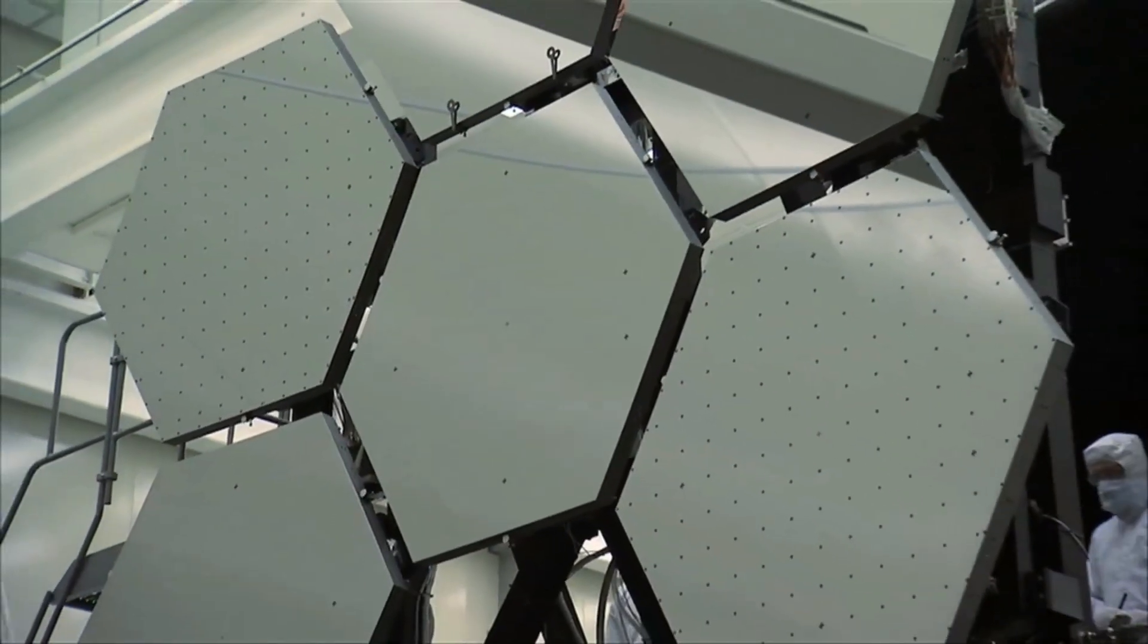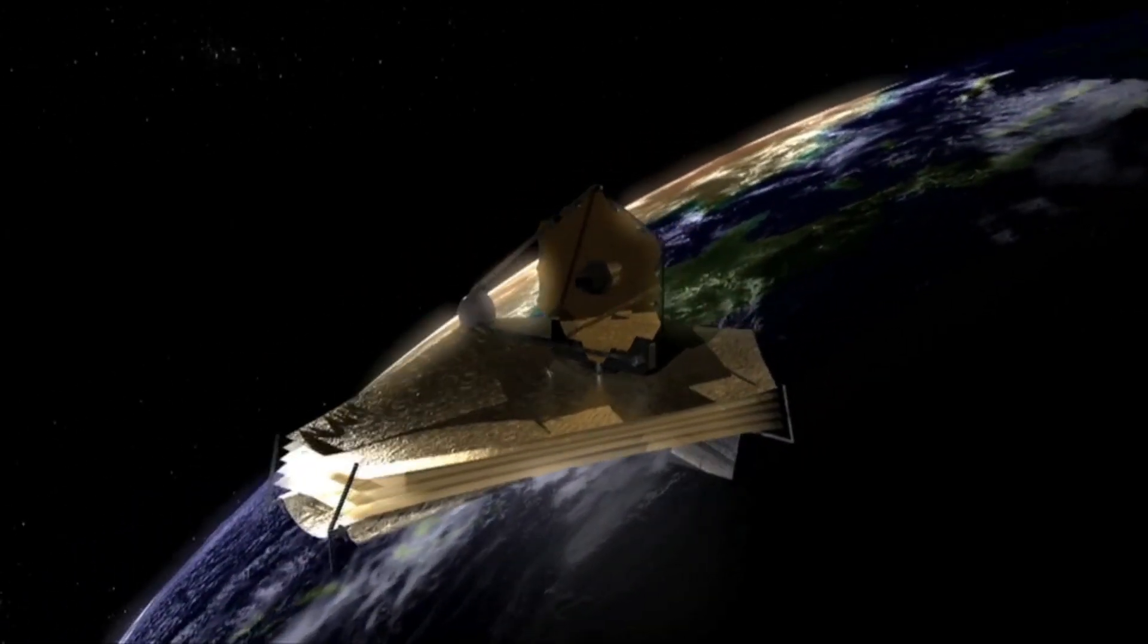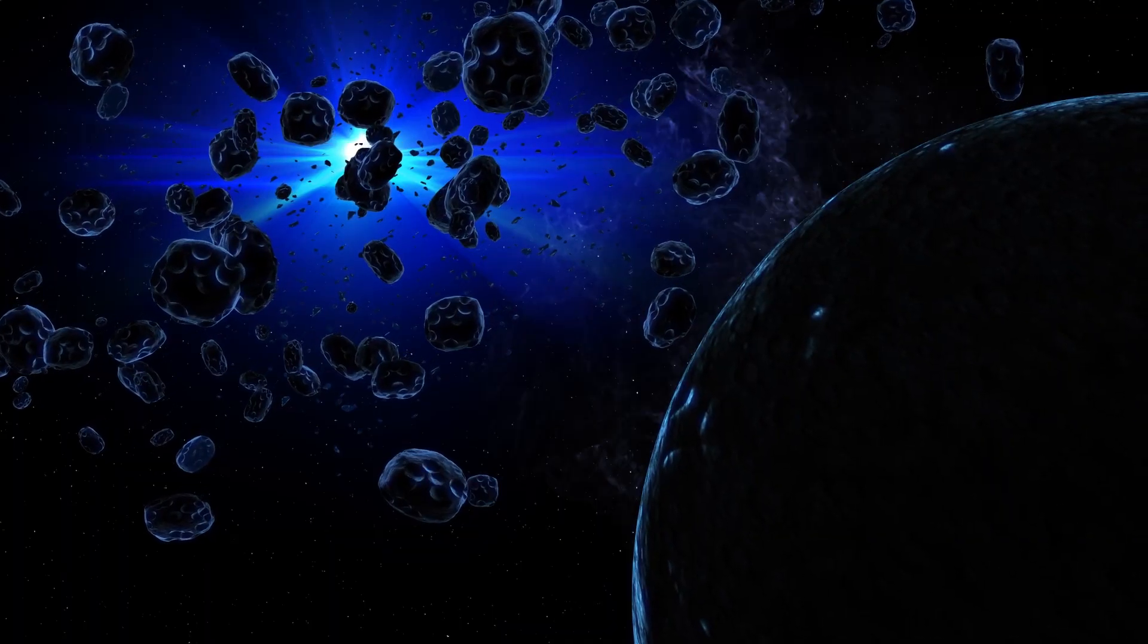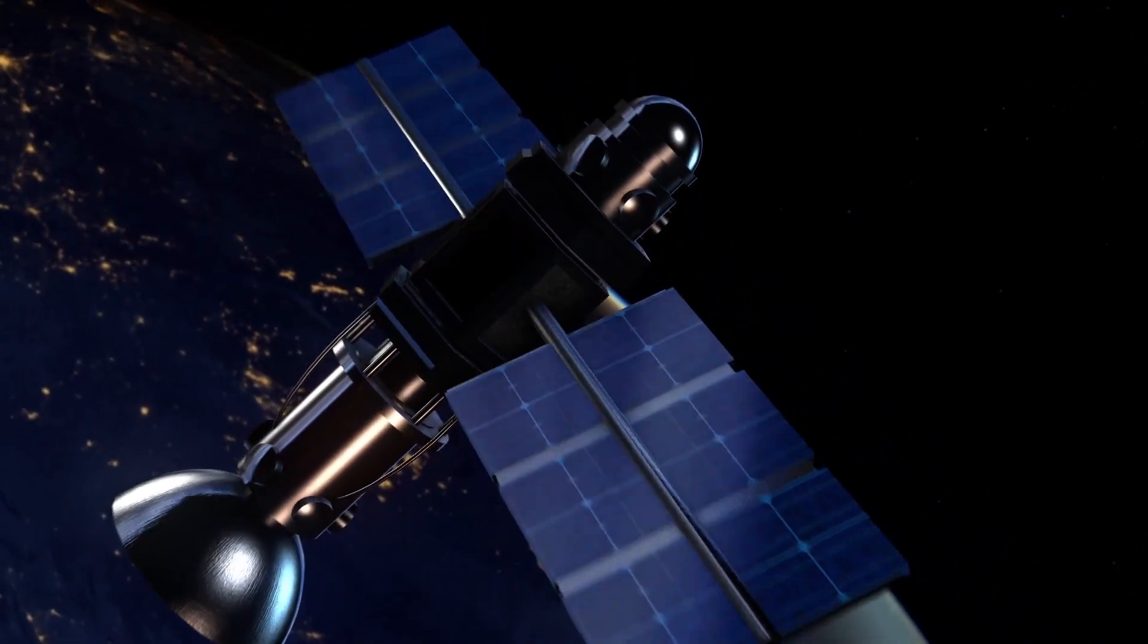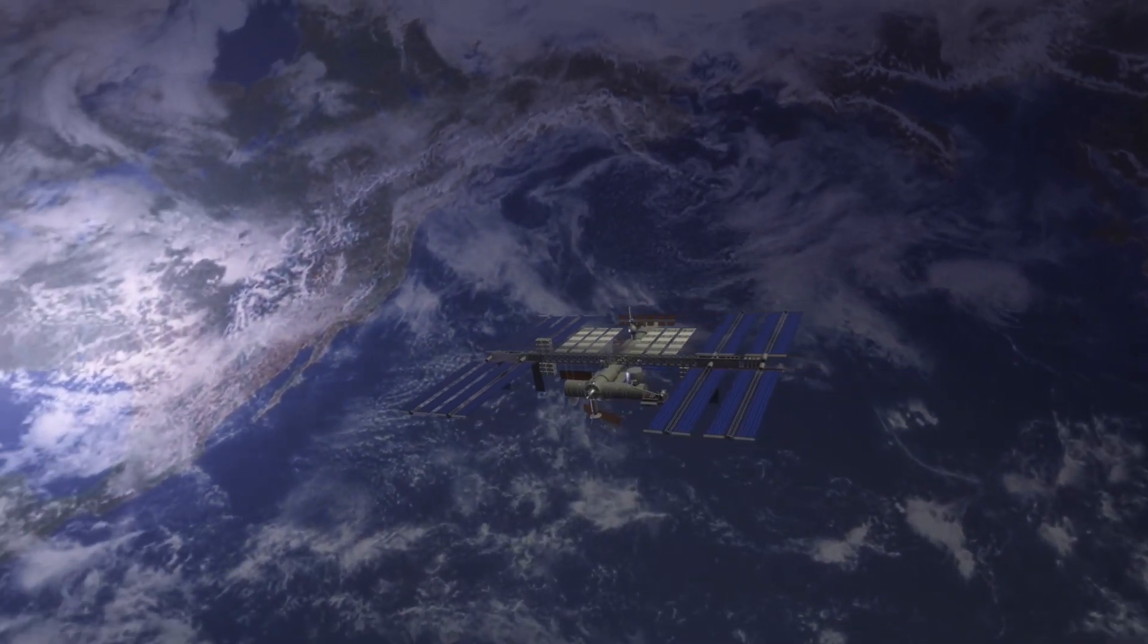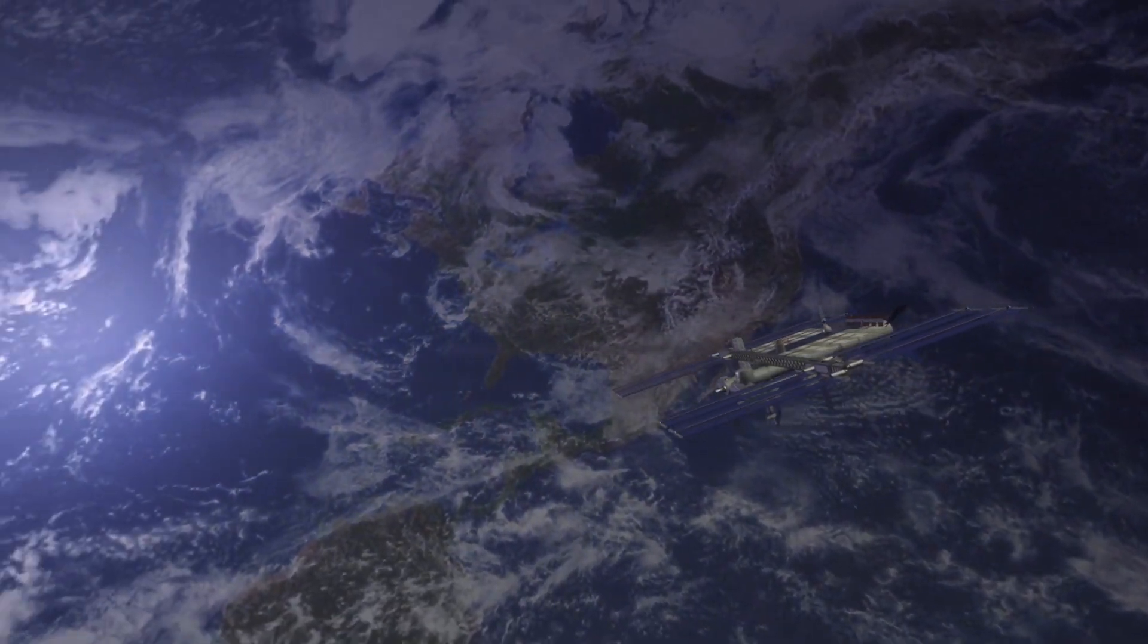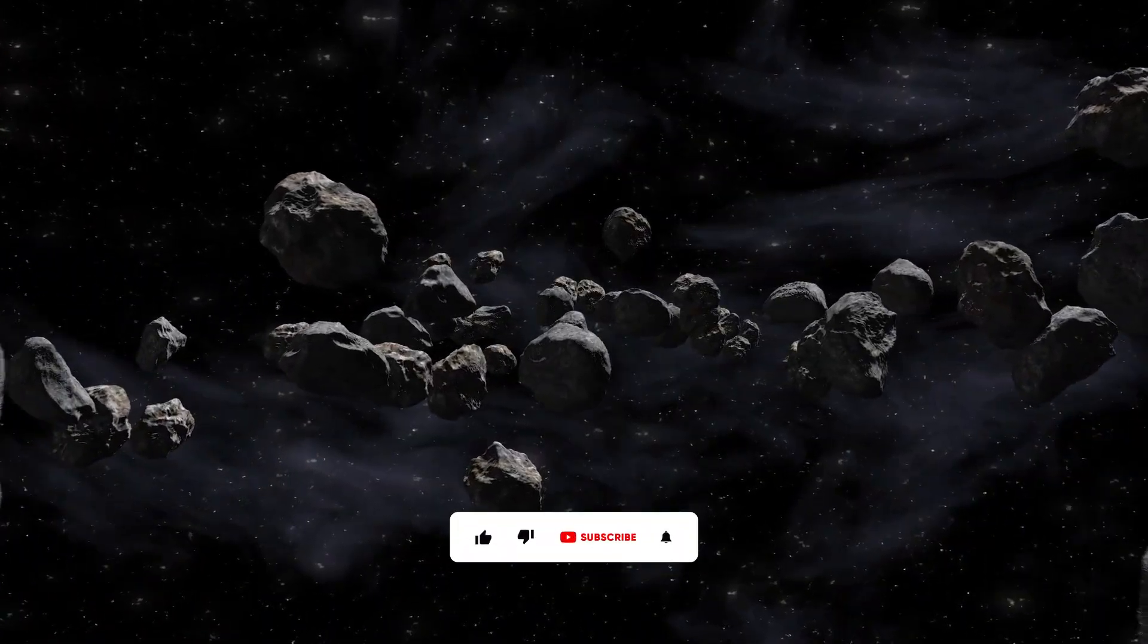But fear not, NASA is on the case. So what exactly is NASA doing to protect Earth from these potential asteroid impacts? NASA's doing some amazing work. They're not just about sending astronauts into space, they're also planetary protectors. They've got a multifaceted approach to tackling the asteroid threat.